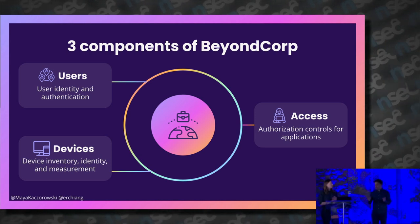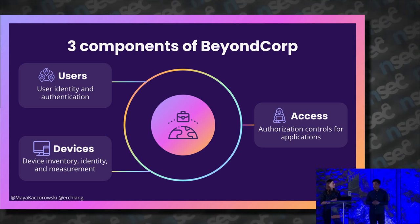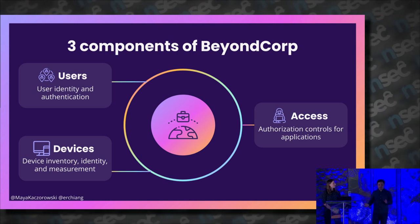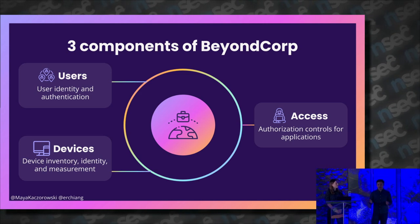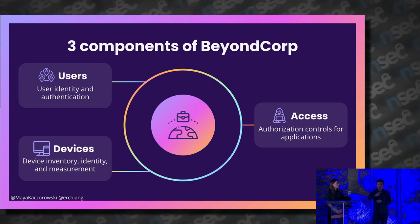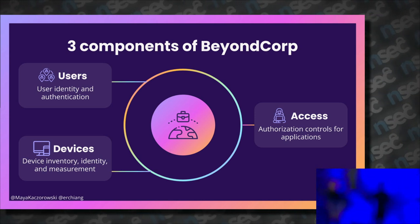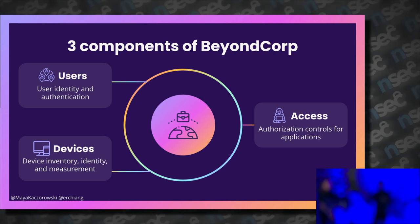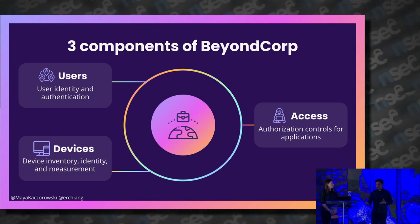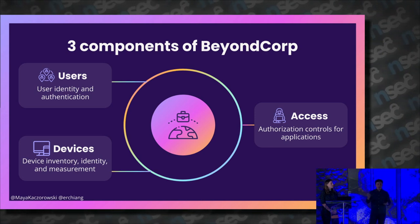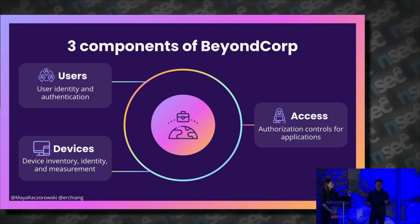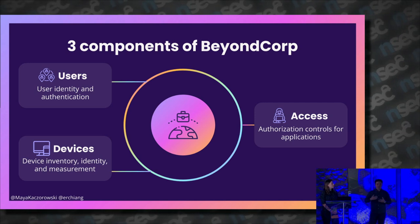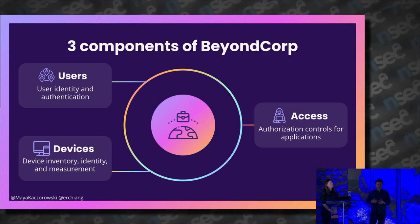BeyondCorp is fundamentally an access question — for example, access to your internal corporate wiki. The way it determines if you, the user making a request, have access is by considering two primary principles. One is classic: who you are — your credentials. The other, more novel one, is what device you're coming from. A good example is a personal versus a corporate device: you might have valid credentials on your personal device, but that doesn't mean we necessarily want you to access the corporate wiki from it.